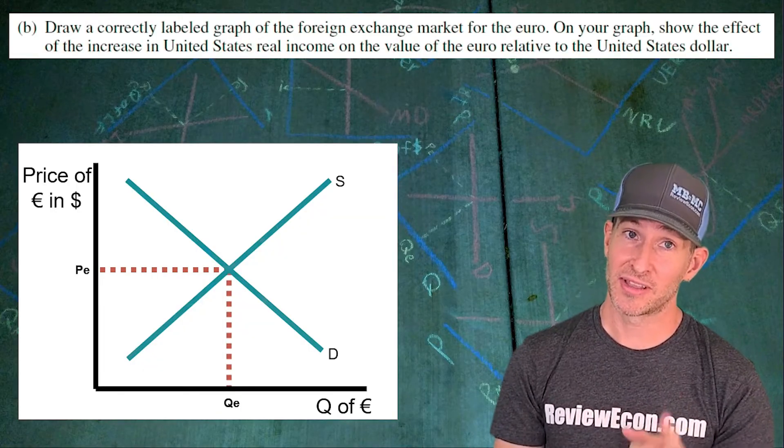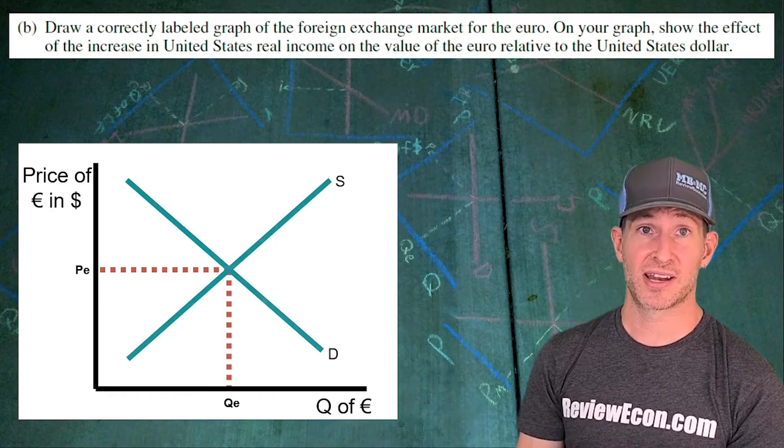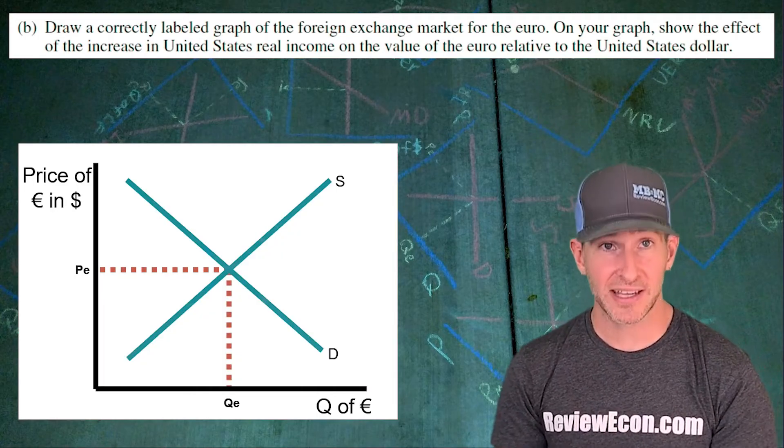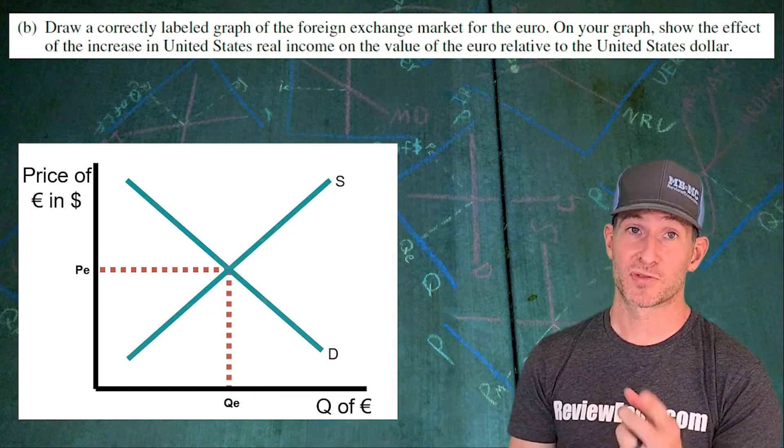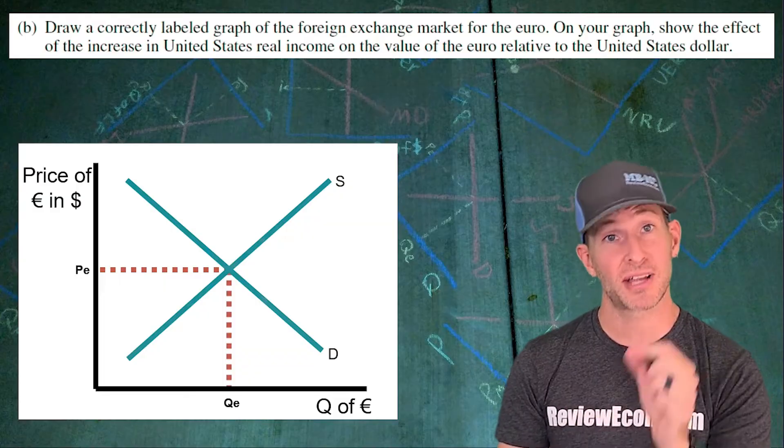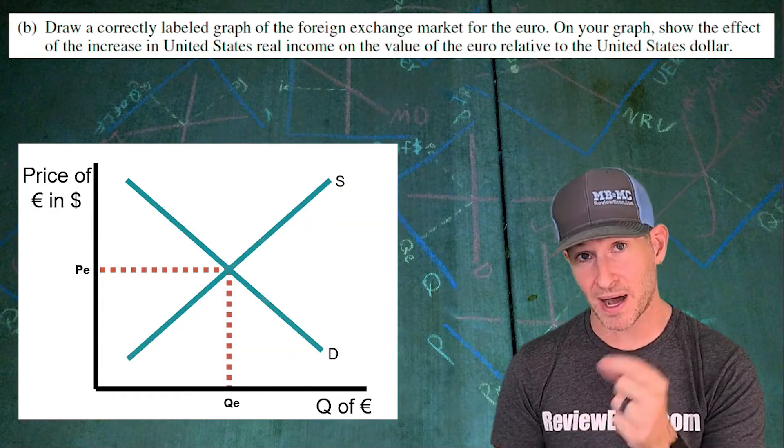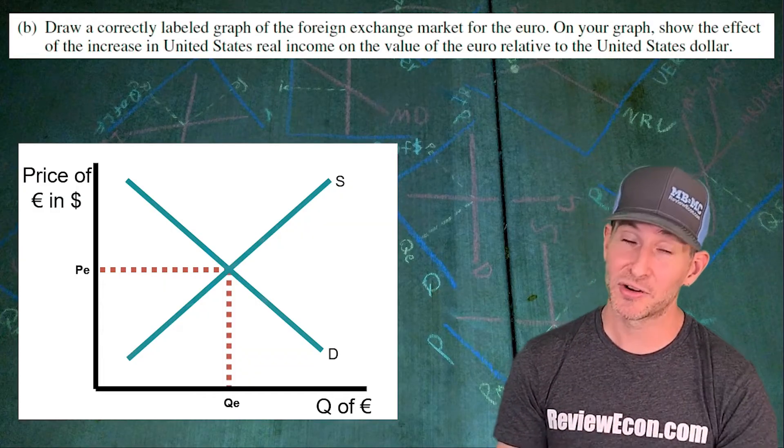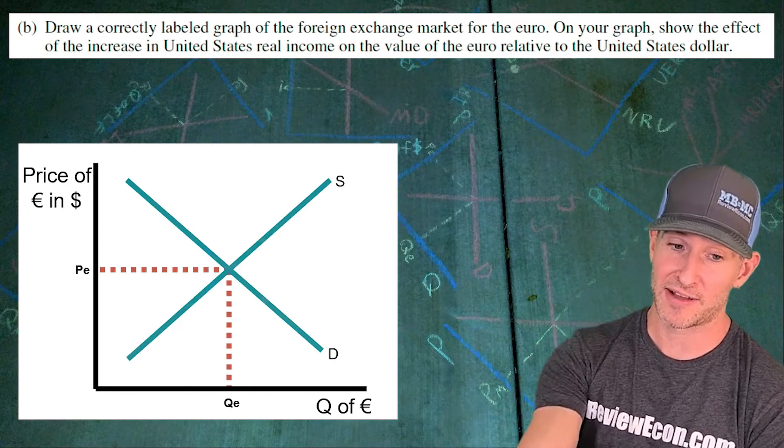Now as we saw earlier, the increase in national income within the United States is going to increase the amount of imports. That means U.S. importers will have to sell U.S. dollars and buy euros to buy those European goods. That increases the demand for the euro in that foreign exchange market.